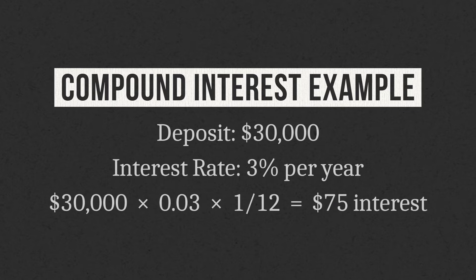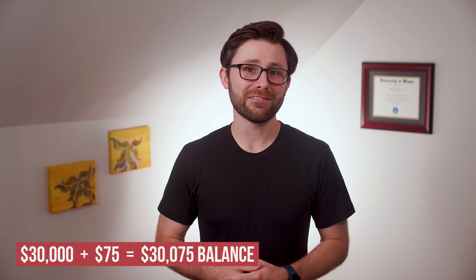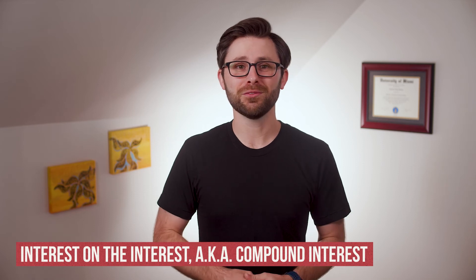I start with my deposit of $30,000, multiply by the interest rate of 3% per year, then multiply by one-twelfth of a year. The result is $75 paid in interest for the month. At this point you're probably thinking, Andrew, that's just simple interest again — I thought we were talking about compound interest. Don't worry, here's where compound interest comes into play. My account with the interest added now has a balance of $30,075. The following month, I'm not only going to earn interest on the initial deposit of $30,000, but also on the additional $75 in interest I earned in month one. I'm now earning interest on the interest — also known as compound interest.